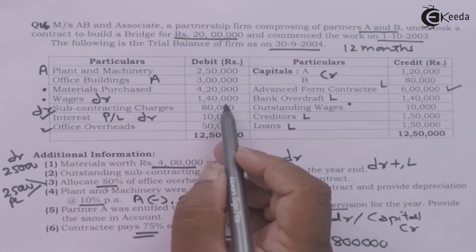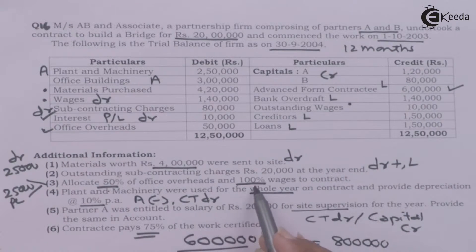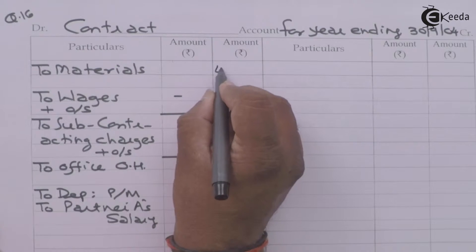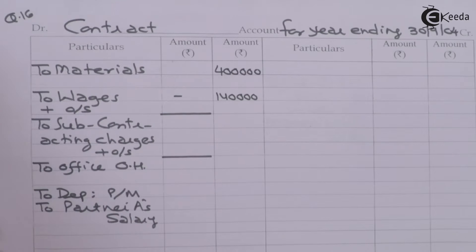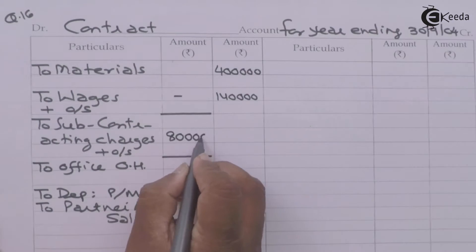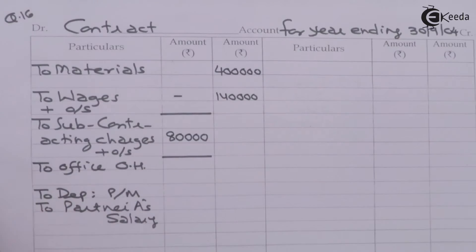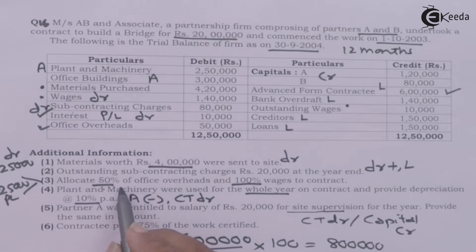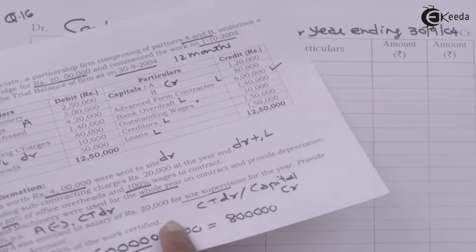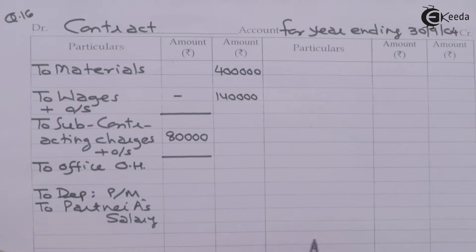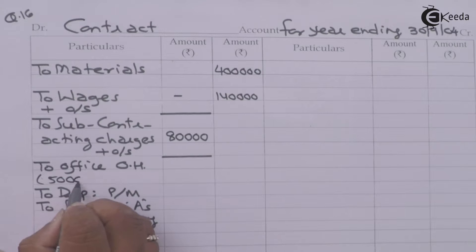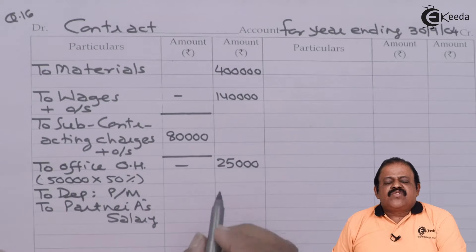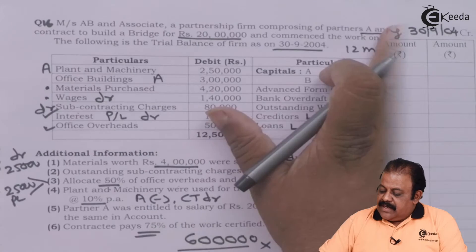Wages of 1,40,000 — the whole amount is charged to the contract account, 100 percent. Out of material purchased 4,20,000, 4 lakhs will be debited to the contract account. Subcontracting charges of 80,000 are debited to the contract account. Interest of 10,000 will be directly debited to profit and loss account. Out of office overheads 50,000, 50 percent means 25,000 will be allocated to the contract account, and the balance 25,000 will be debited to profit and loss account.